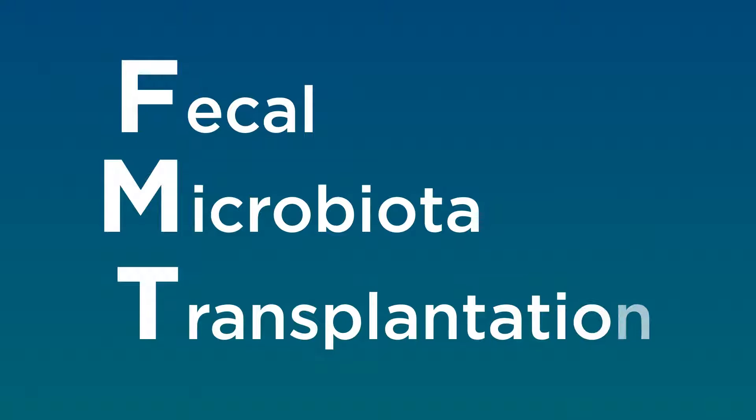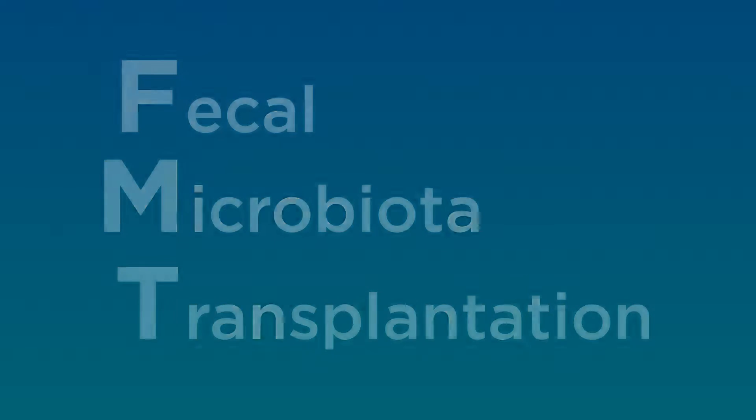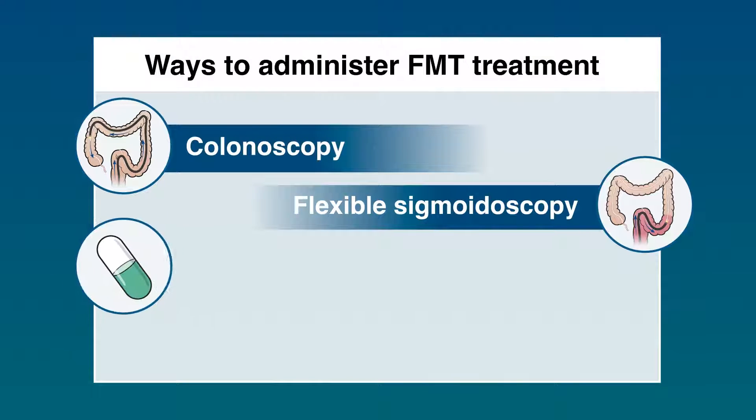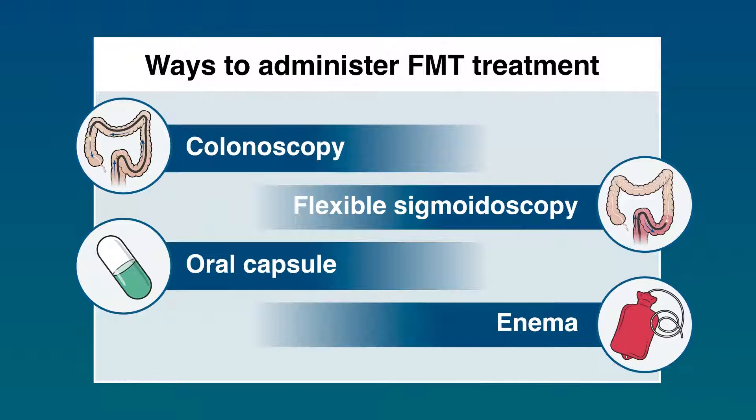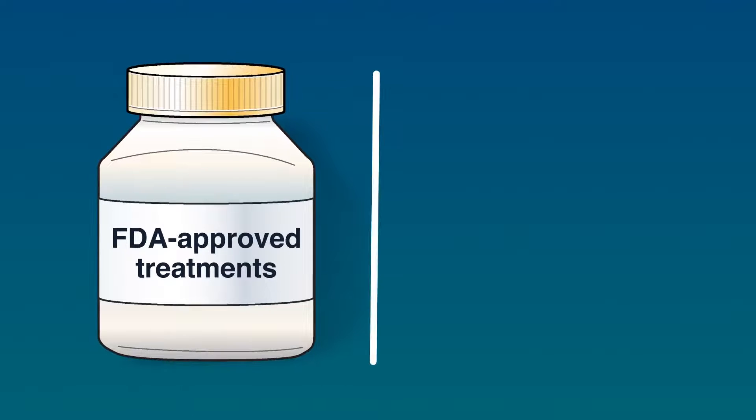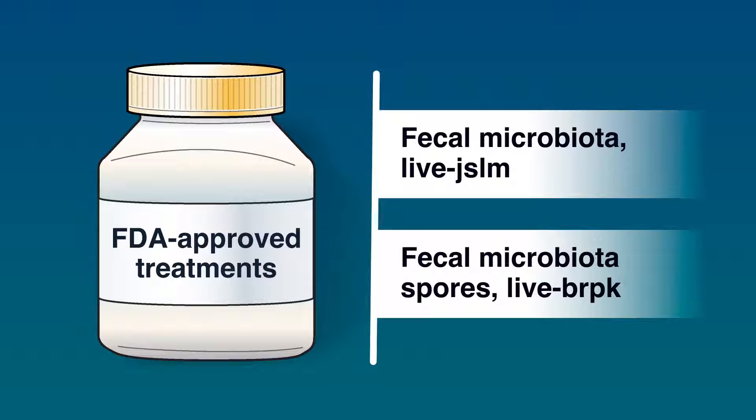FMT, or fecal microbiota transplantation, is one type of fecal microbiota-based treatment for C. diff infection. This is often done with a colonoscopy, flexible sigmoidoscopy, oral capsule, or enema. There are also two FDA-approved fecal microbiota-based treatments to stop C. diff from coming back in adults.